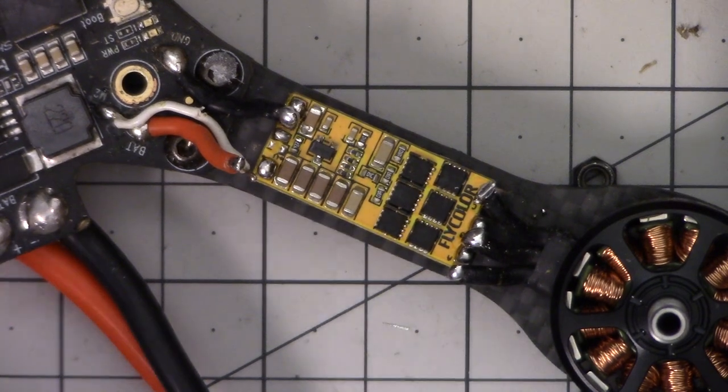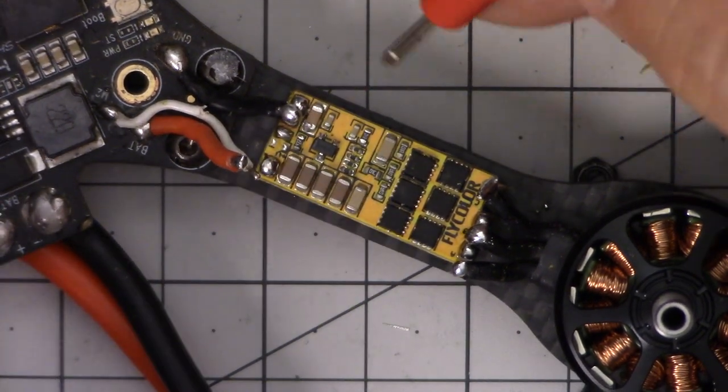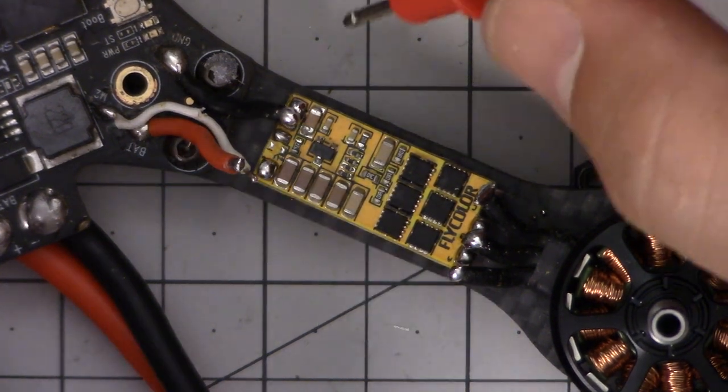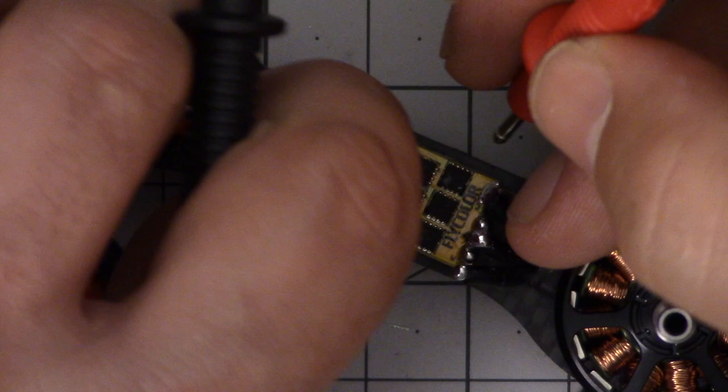The other thing we can do with the continuity test function is we can find out what the pads are on a component, like for example this ESC. And that is actually the topic that brought me to this video. I'm replacing the ESCs on this copter and the ESCs aren't very well marked.